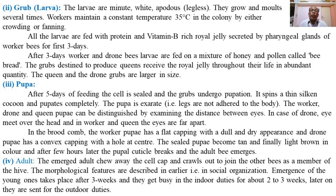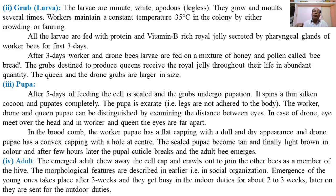The third stage of the life cycle is the pupa. After five days of feeding, the respective brood cells are sealed using wax cappings by the workers. When larvae of all castes become mature after five days of feeding, the wax cells are sealed and the larvae enter the dormant phase of life — the pupa stage.